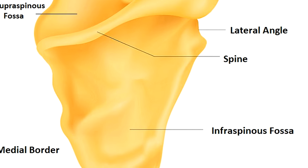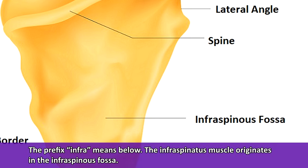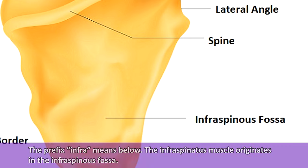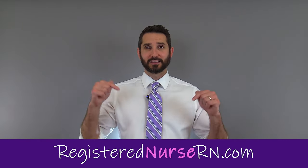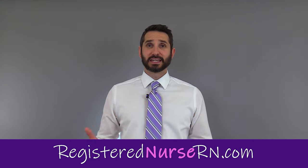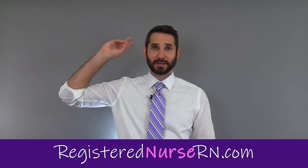Below the spine, we have another depression called the infraspinous fossa — the prefix 'infra' means below. If you can get those directional terms and prefixes down, it will help you a lot. The infraspinatus muscle originates in the infraspinous fossa. That wraps up this video on the bones that make up the pectoral girdle. You can go to our website and take a free quiz by clicking the link in the description, and we have a whole playlist of anatomy and physiology videos to help with your studies. Thank you so much for watching and please subscribe.